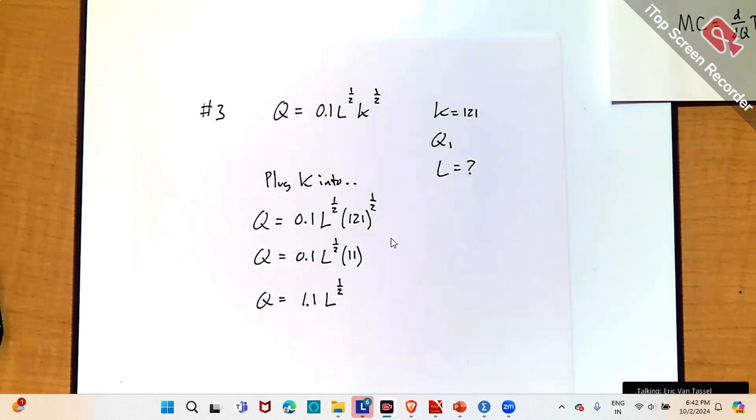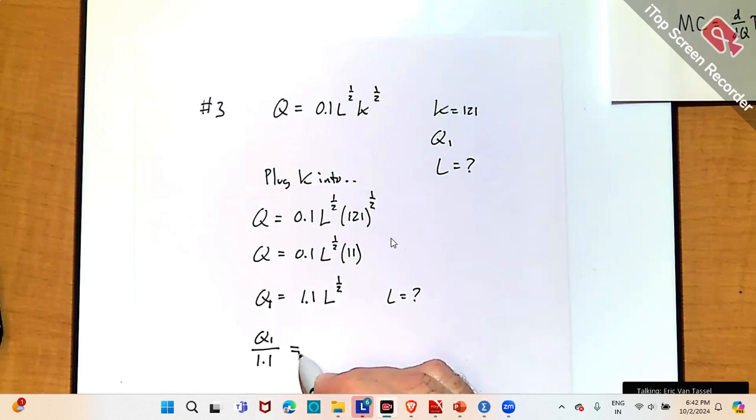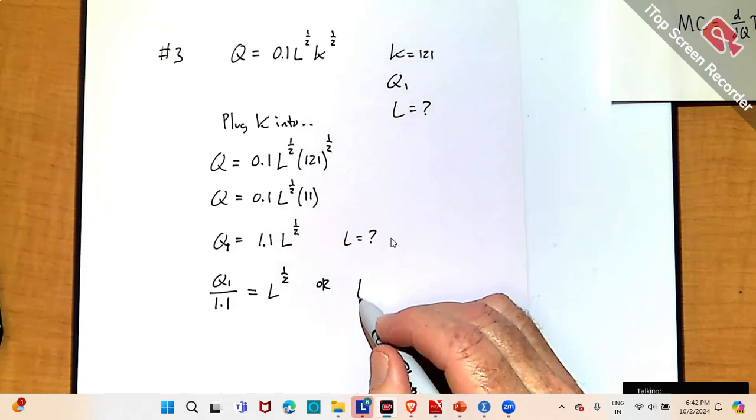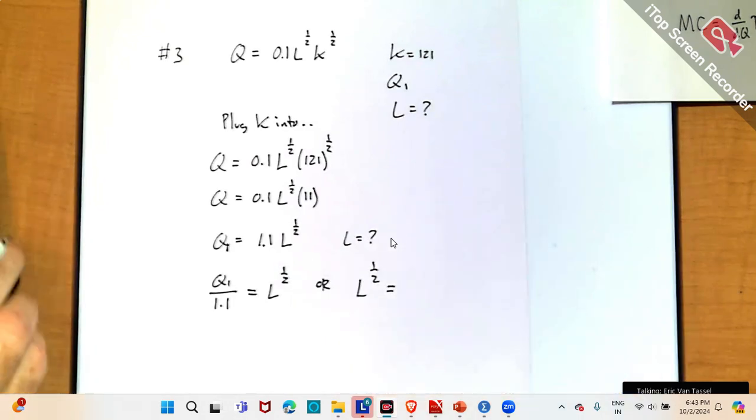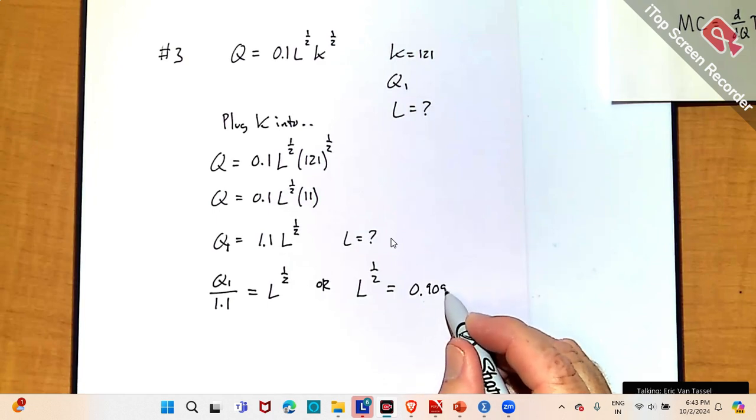Alright, now what? So, I'm trying to solve for L. What would be the L that would give me that target? So, the idea is you have a target over here on the left side. Like 90 units or whatever. And so, I'm trying to figure out what L is. So, if I divide both sides by 1.1, you have L to the one half. And let me just put that in decimal form. So, 1 divided by 1.1 is 0.909.